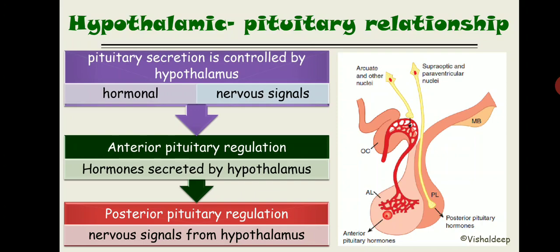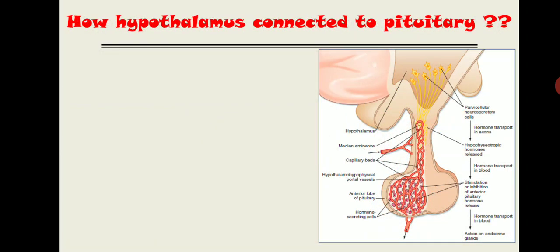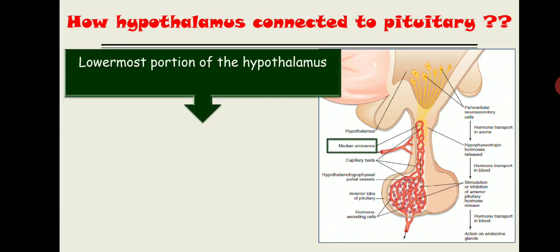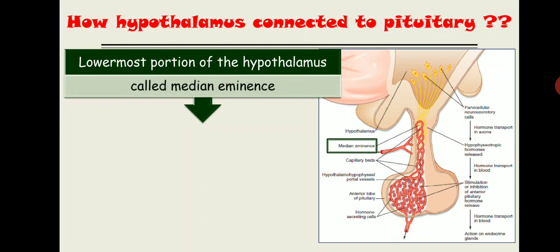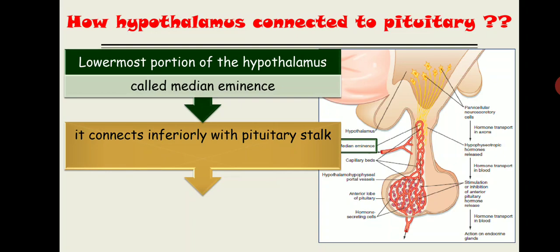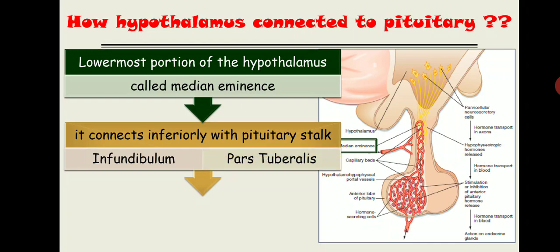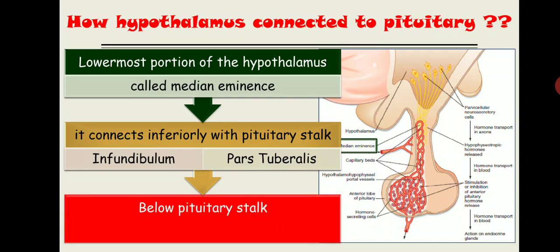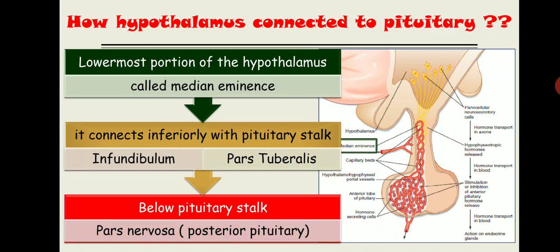The lowermost portion of the hypothalamus is the median eminence, which is connected to the pituitary by the pituitary stalk. The pituitary stalk has two portions: just below the median eminence is the infundibulum, and below the infundibulum is the pars tuberalis. Below the pituitary stalk is the actual posterior pituitary gland. So anatomically, the pituitary gland is connected to the hypothalamus via the median eminence, infundibulum, pars tuberalis, and finally the posterior pituitary.